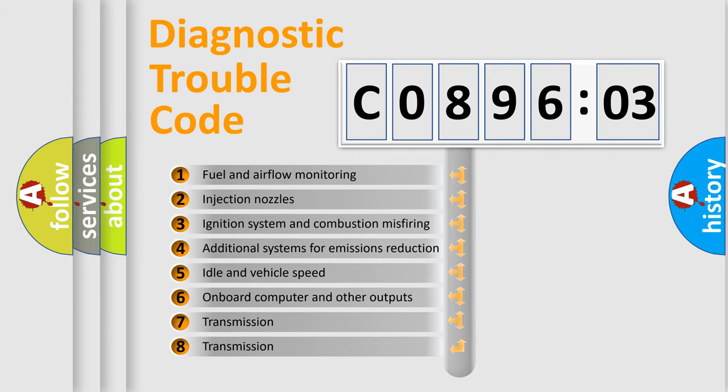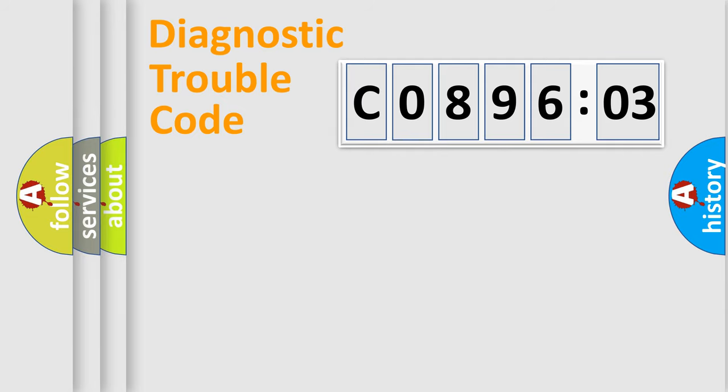The third character specifies a subset of errors. The distribution shown is valid only for the standardized DTC code. Only the last two characters define the specific fault of the group.